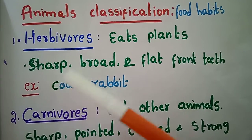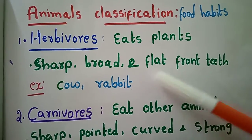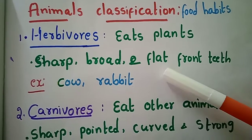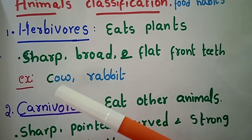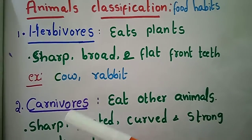Herbivores have broad and flat front teeth — front teeth are flat and rounded. Examples include cow and rabbit.